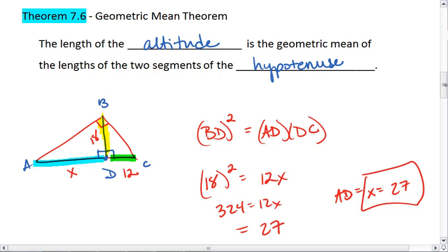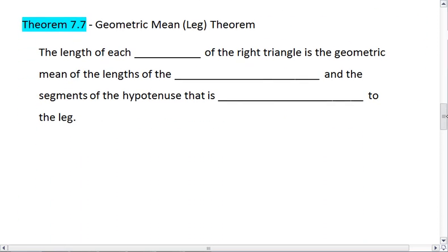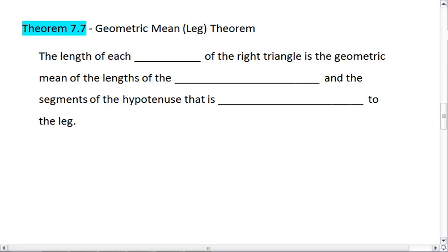Okay, this brings us to our next theorem, Theorem 7.7, the geometric mean or leg theorem. All right, this one's a little bit trickier. Again, we are dealing with a right triangle with an altitude that drops to the hypotenuse.